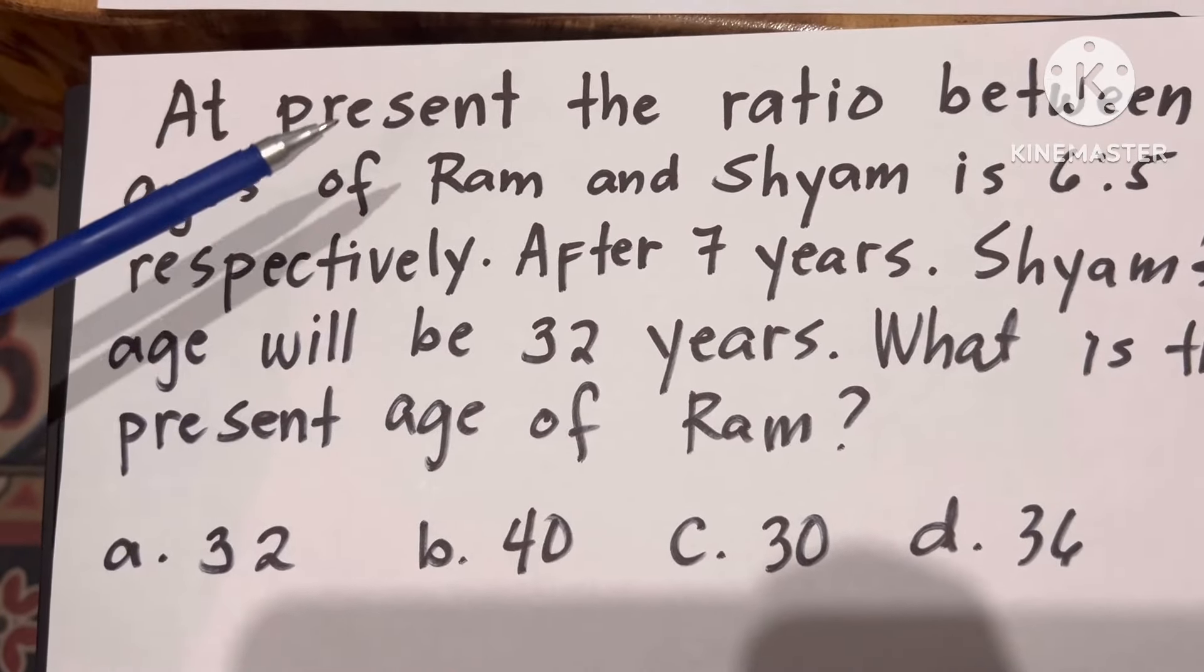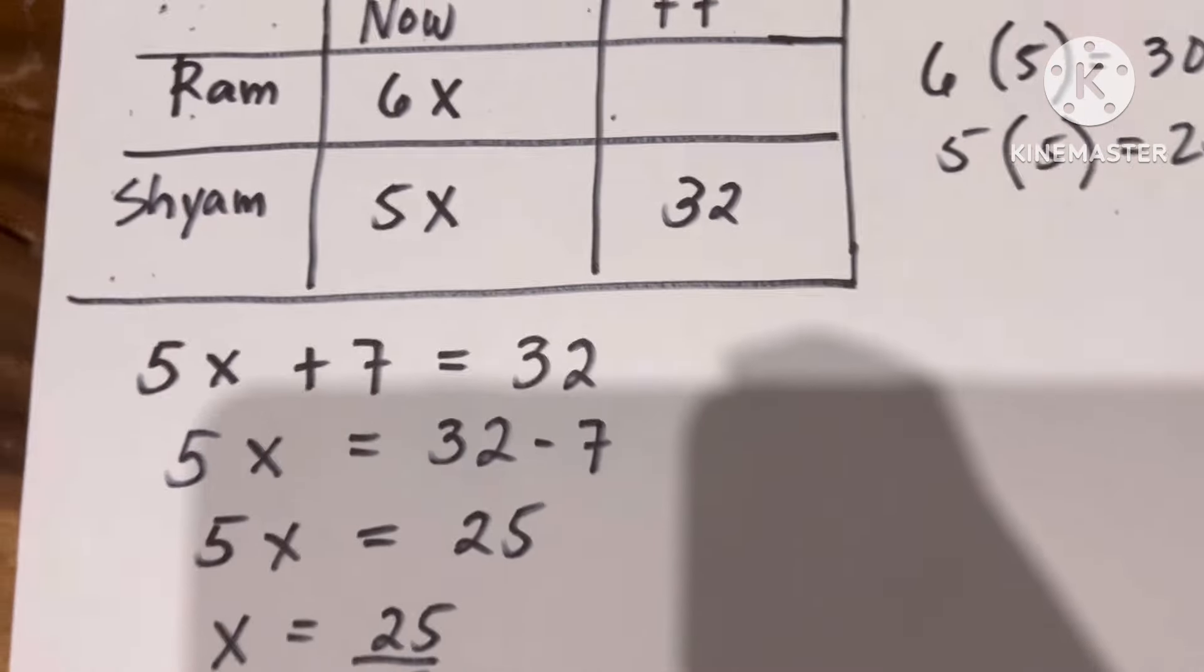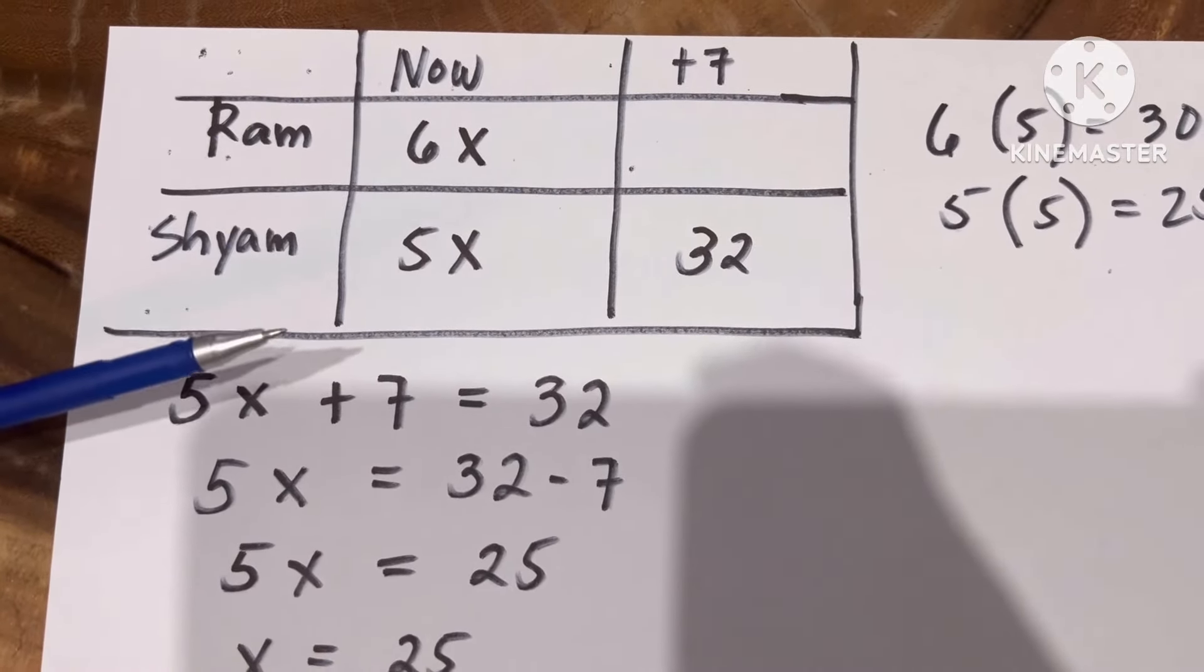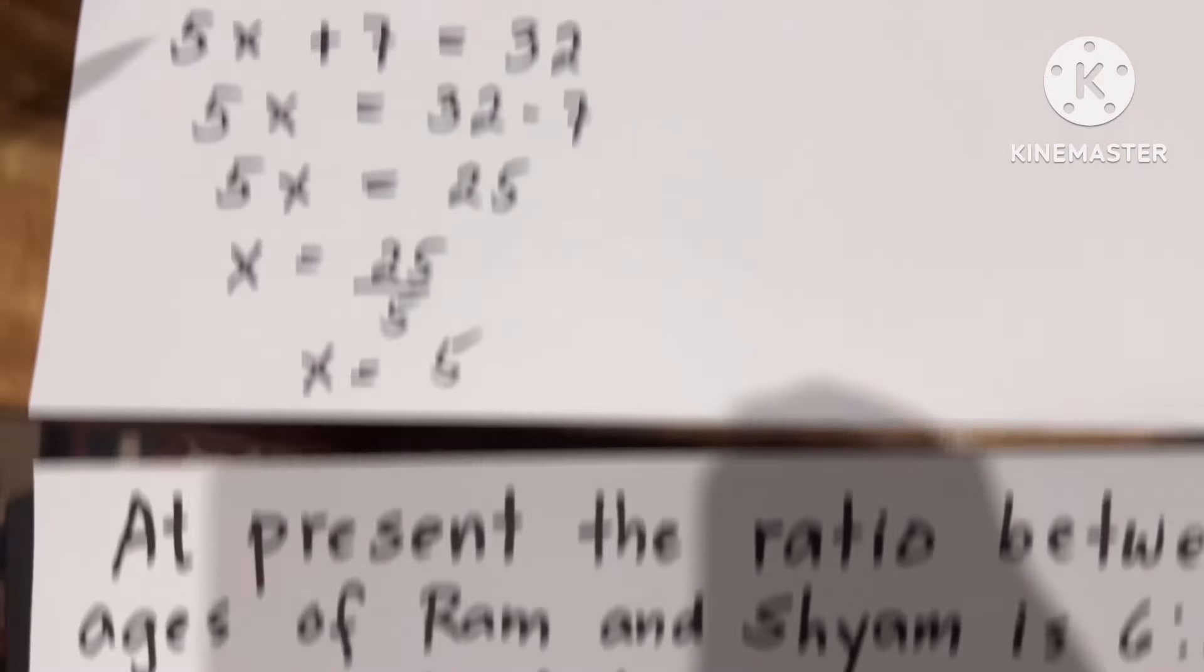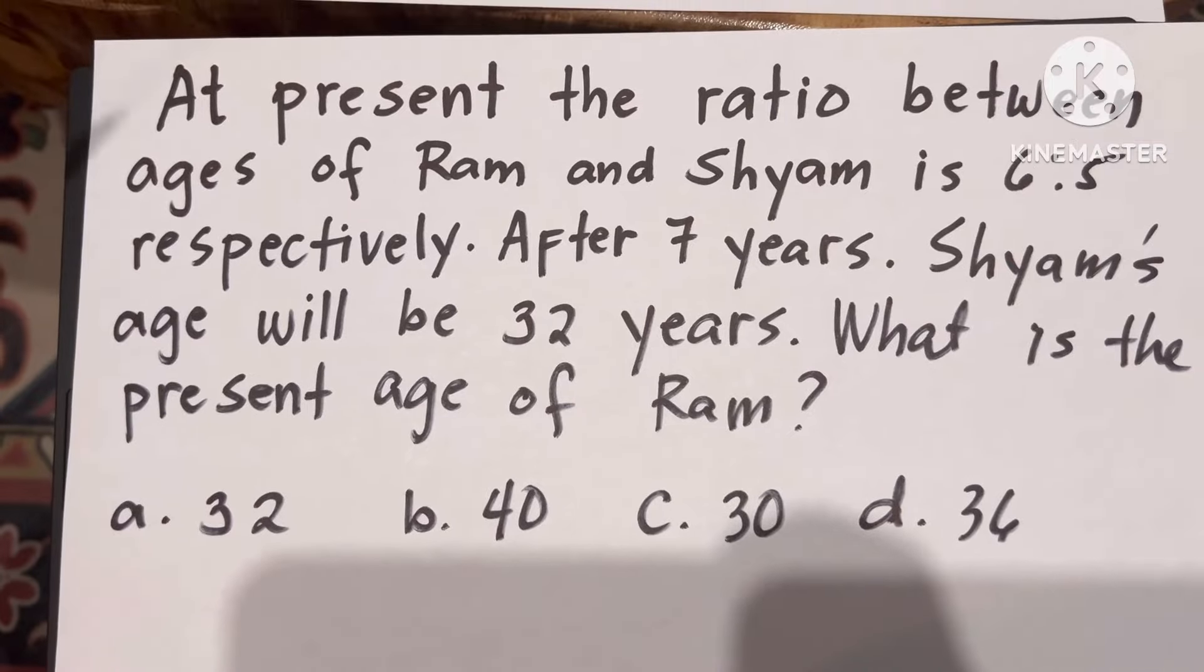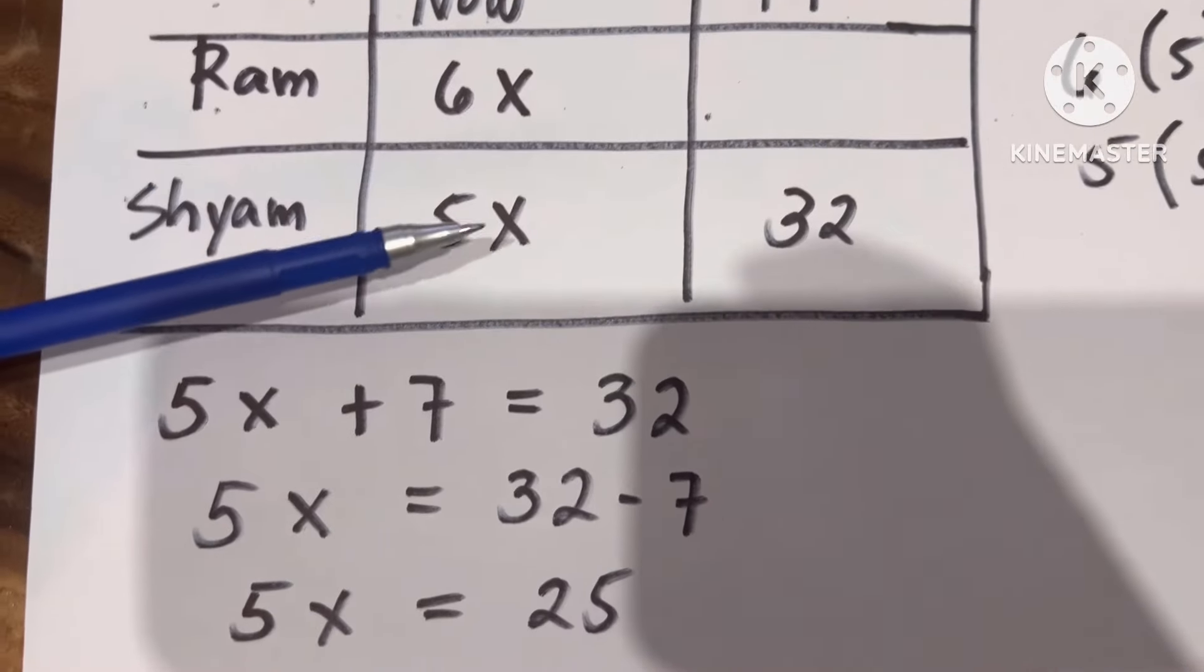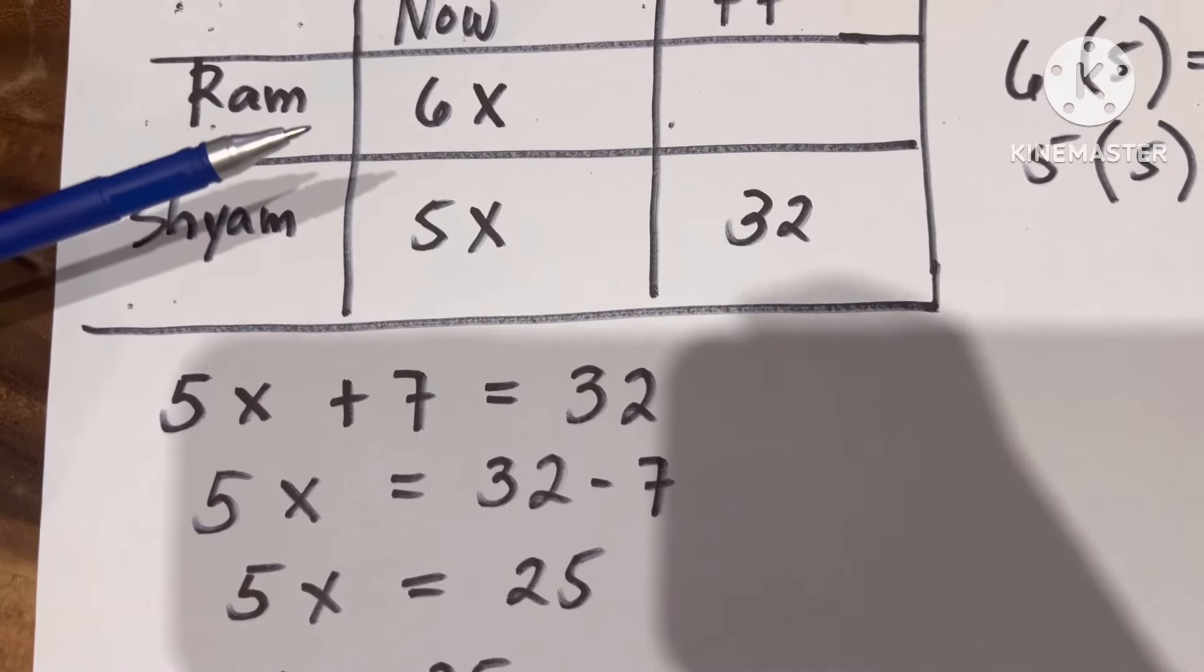That means our keyword is 'present'. If we're going to make the equation, the now age of Ram is 6 and Shyam is 5, but that is the ratio. We do not know yet the exact age of Ram and Shyam, so we are going to put X beside 6 as well as beside 5.